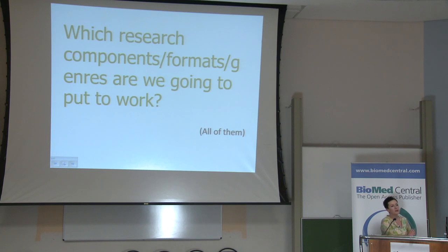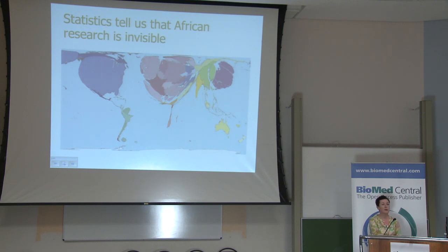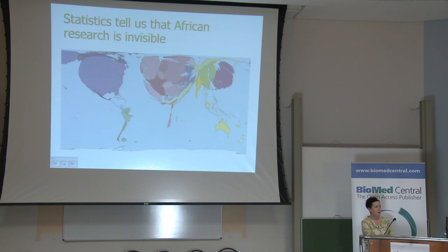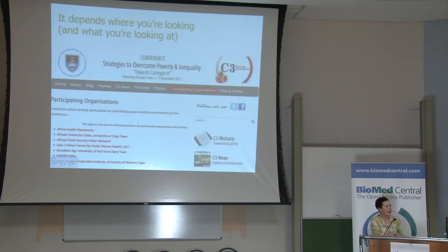If we think about what kinds of research we want to put to work in our context, the short answer is all of them. This is a world mapper image — very out of date from 2001, and there hasn't been a more recent version — but it represents African representation in the ISI indices. Going back to the point made this morning: how little research is being produced in Africa does not mean that research is not taking place. As an example of the wealth we have at UCT, there was recently the very big Carnegie 3 conference aimed at addressing poverty and inequality in Africa.